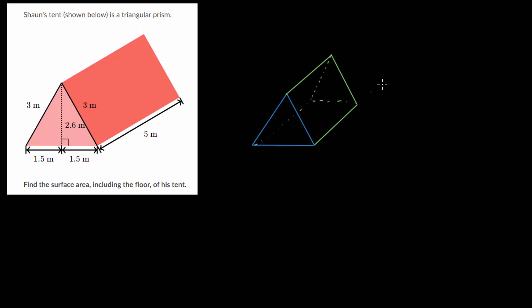So with this tent, we have two triangular faces and three rectangular faces. And if we find the area of each of those, we can just add them together to find the total surface area. And this is generally true of triangular prisms.